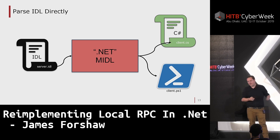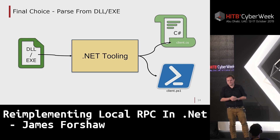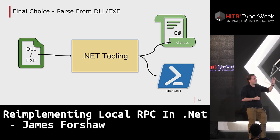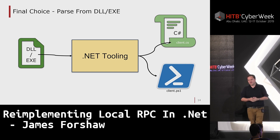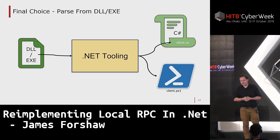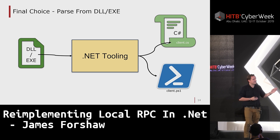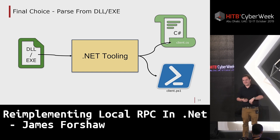Implementing my own MIDL compiler would require feature parity with Microsoft's compiler — too much work. Instead, I thought: I already need to extract data from a DLL or executable, so why not just consume the DLL or executable directly rather than the IDL file? I can do some processing and use that to generate .NET code. This is the approach I chose because it solves my direct problem. The only alternative for services where you do have an IDL file would be to compile it to a C DLL and then use this tooling to pull it back out.